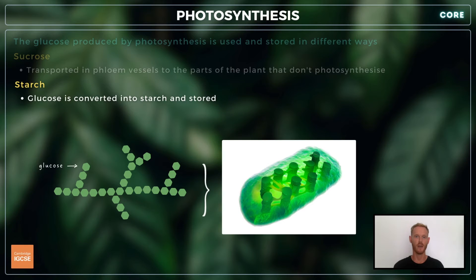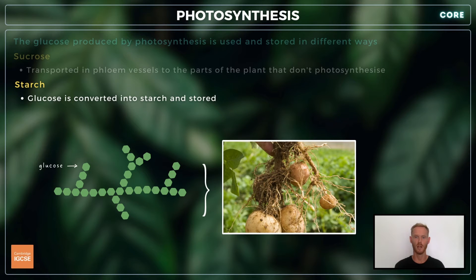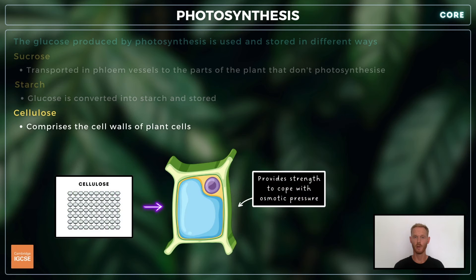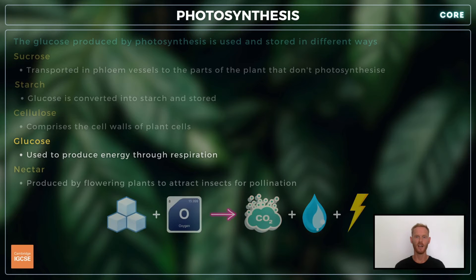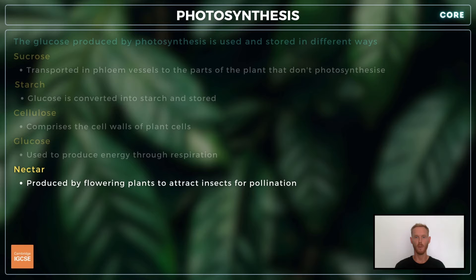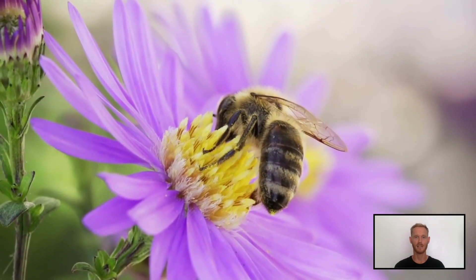Starch is stored within the starch granules of chloroplasts, in the cells of stems and roots, and in tubers, which are specialized organs that hold large starch reserves. Some of the glucose produced is also used to synthesize cellulose, a tough fibrous molecule that comprises the freely permeable cell walls of plant cells. Glucose can also be used to provide energy through respiration — oxygen reacts with glucose to release energy, and the byproducts are carbon dioxide and water. Finally, nectar in flowers is made from a mixture of carbohydrate molecules including glucose, fructose and sucrose, which flowering plants produce and store to attract insects for pollination.